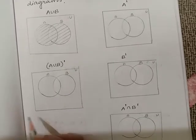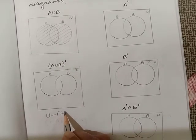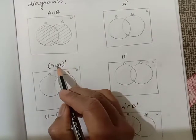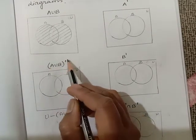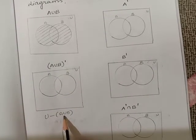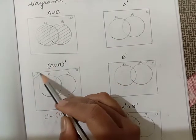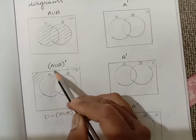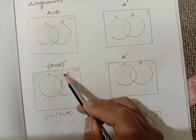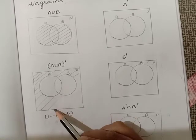So what is meant by (A∪B)'? The complement means universal minus A union B. This gives you (A∪B)'. It means we need the universal set but we don't want A union B. Omitting A union B, we are going to cover the remaining parts, and that gives you (A∪B)'.